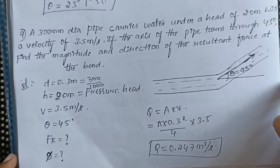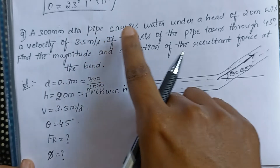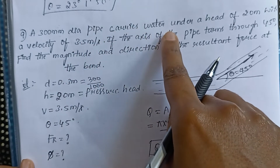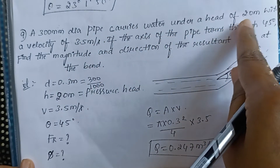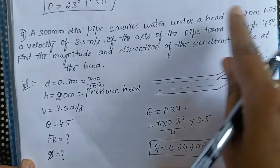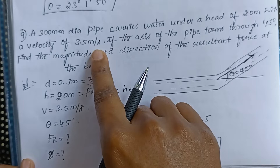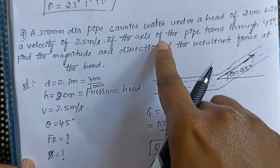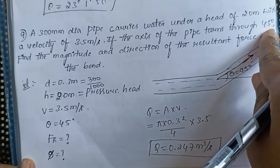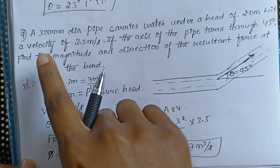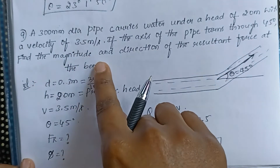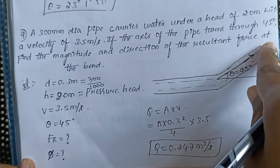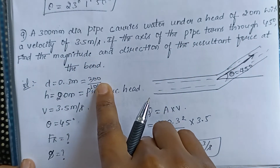Here is the question. A 300 mm diameter pipe carries water under a head of 20 meters with a velocity of 3.5 meters per second. If the axis of the pipe turns through 45 degrees, find the magnitude and the direction of the resultant force at the bend.